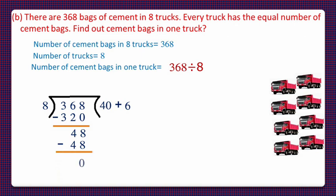So, no bags are left behind. So, 40 plus 6 is equal to 46 will be the answer. And 46 bags will be there in each truck. Now, let us solve it using the division by multiplication tables.